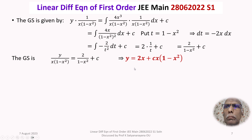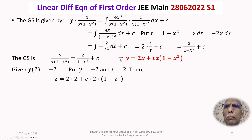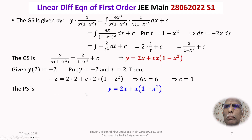We have the general solution y(x) = 2x + C·x(1 - x²). Now applying the initial condition y(2) = -2: substituting y = -2 and x = 2 gives -2 = 2(2) + C·2·(1 - 4) = 4 + C·2·(-3) = 4 - 6C. Simplifying: -6 = -6C, so C = 1. The particular solution is therefore y = 2x + x(1 - x²).